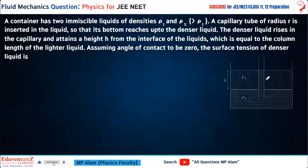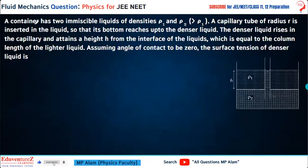The question says that a container has two immiscible liquids of density Rho 1 and Rho 2, where Rho 2 is greater than Rho 1. The two liquids are immiscible — they don't mix.